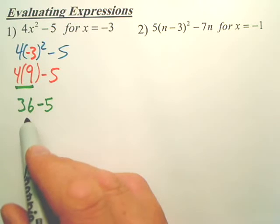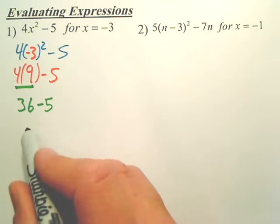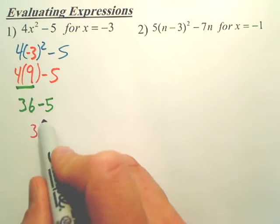Subtract. And hopefully this is a pretty simple one. 31. It is 31. 36 minus 5 is 31.